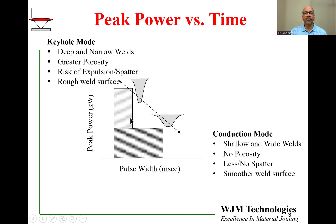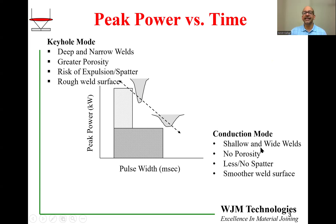If you go with a high peak power short pulse, that will produce a keyhole type weld. The weld is going to be deep and narrow, it is likely to have more porosity especially related to keyhole closure porosity, and it is also likely to have more expulsion and spatter with a rough weld surface. On the other hand, if you use the same energy but have low power and longer time in the pulse, you can make a conduction mode weld where the weld is shallow and wide, there is no porosity, almost no spatter, and the surface is very smooth.